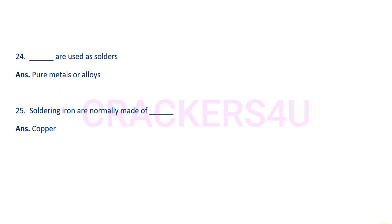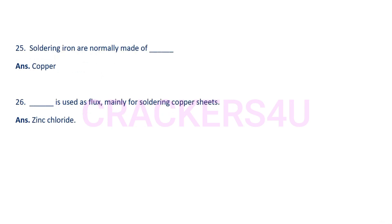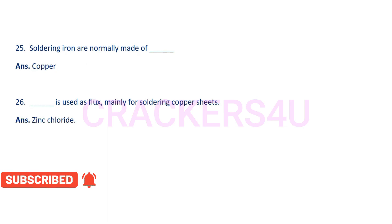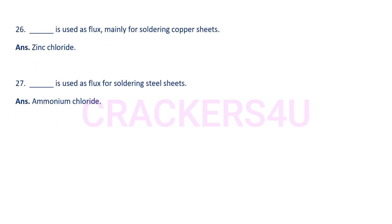Question number twenty-five: Soldering irons are normally made of copper. Question number twenty-six: Zinc chloride is used as flux mainly for soldering copper sheets. Question number twenty-seven: Ammonium chloride is used as flux for soldering steel sheets.